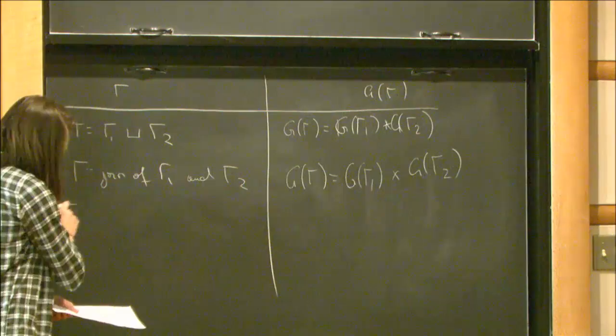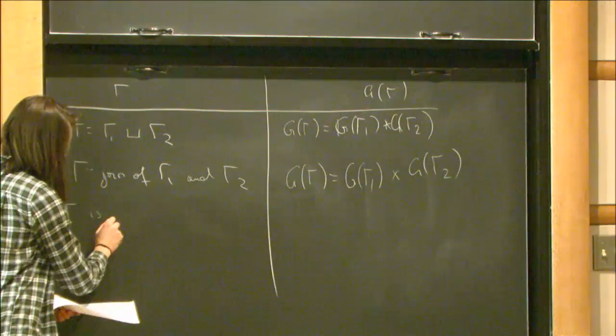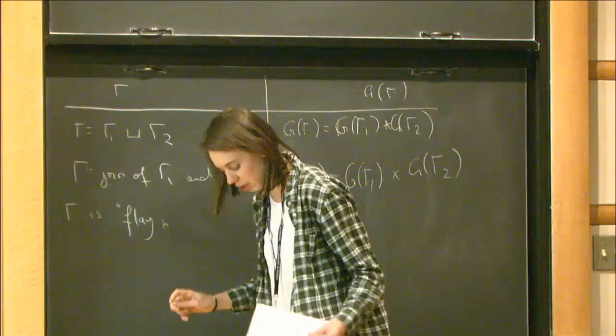Another combinatorial property of graphs that matters is what's called flag no square.